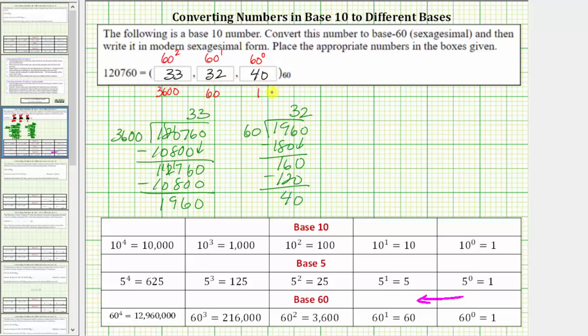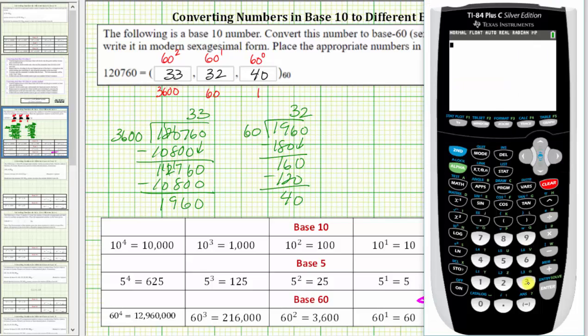Let's quickly check this on the calculator. Let's verify that 33 times 3,600 plus 32 times 60 plus 40 times 1, or just 40, does equal the base 10 number of 120,760, which it does, verifying our answer is correct.